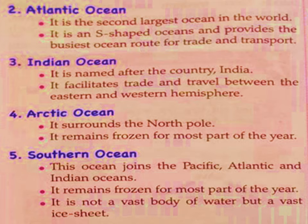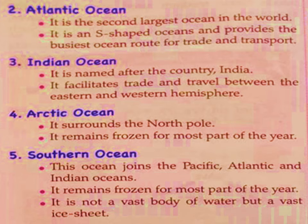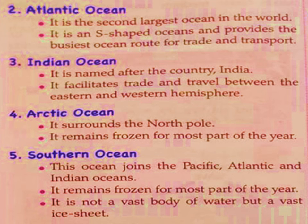The Indian Ocean has its name after our country India. It facilitates trade and travel between the Eastern and Western Hemisphere. The Arctic Ocean surrounds the North Pole, and most of it remains frozen for most of the year. The Southern Ocean joins the Pacific, Atlantic, and Indian Oceans. It remains frozen for most of the year — it is not a vast body of open water but a vast ice sheet, and it surrounds the South Pole.